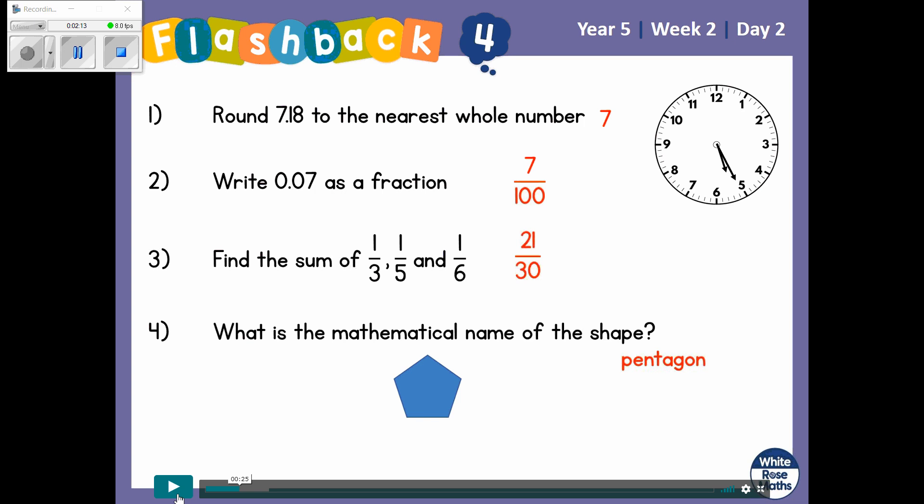What was 1/6? To get from 6 to 30, we need to multiply 6 by 5. So whatever we do to the bottom, we have to do to the top. So our numerator, we're also multiplying by 5 and that becomes 5/30.